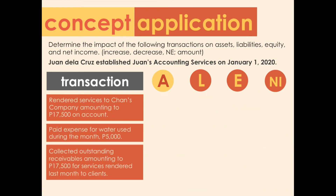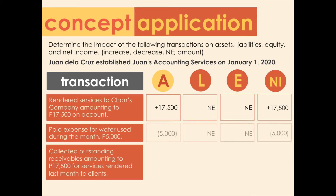Transaction four: rendered services to Chance Company amounting to 17,500 pesos on account. This increases accounts receivable and in turn assets by 17,500. Net income also increases by 17,500. Transaction five: paid expense for water use during the month — 5,000 pesos. This decreases assets by 5,000, and the expense results in a decrease in net income by the same amount.